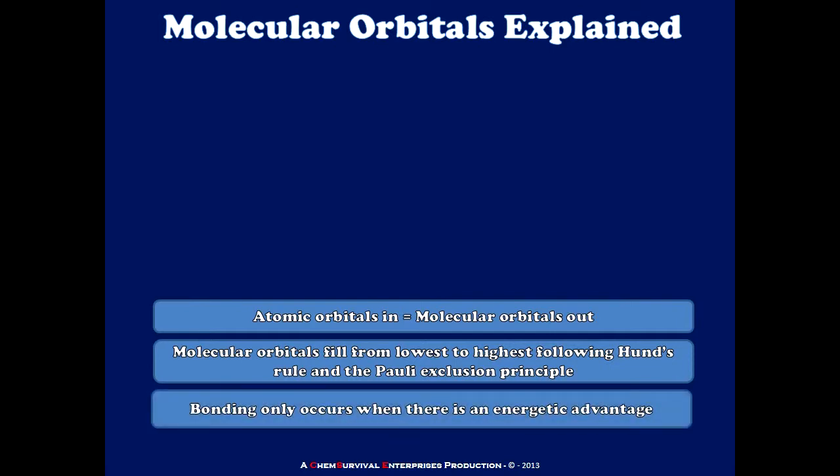And finally, bonding between any two atoms will only occur when there is an energetic advantage to populating the molecular orbital system when compared to the atomic orbital system. So now that we have a rough understanding of what molecular orbitals are and the rules that we need to follow to predict how they'll behave, let's take a look at some specific simple molecules and see if we can explain their behavior using molecular orbital theory.